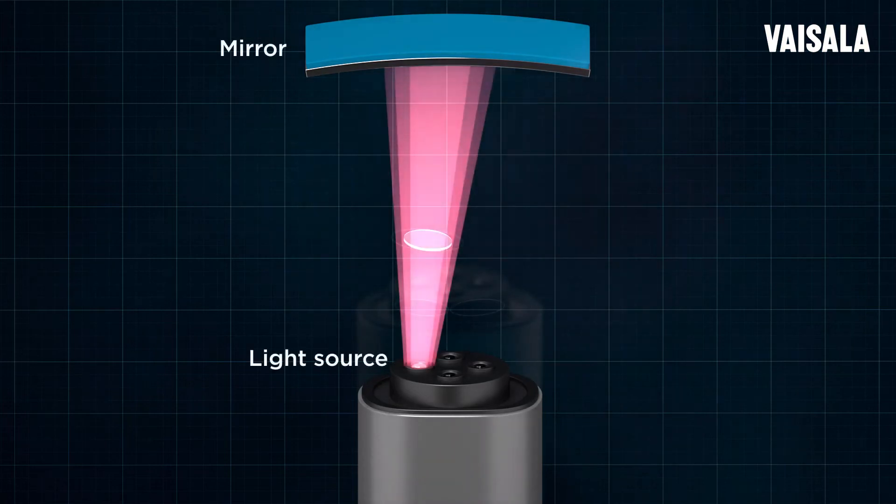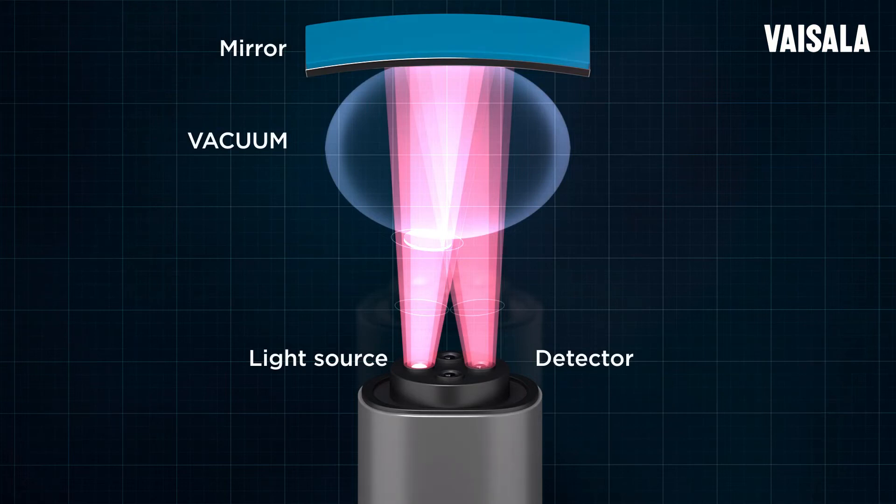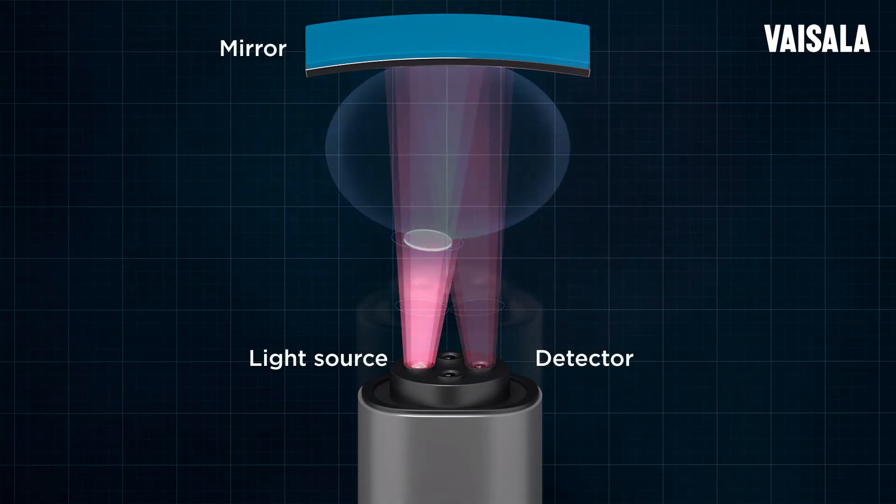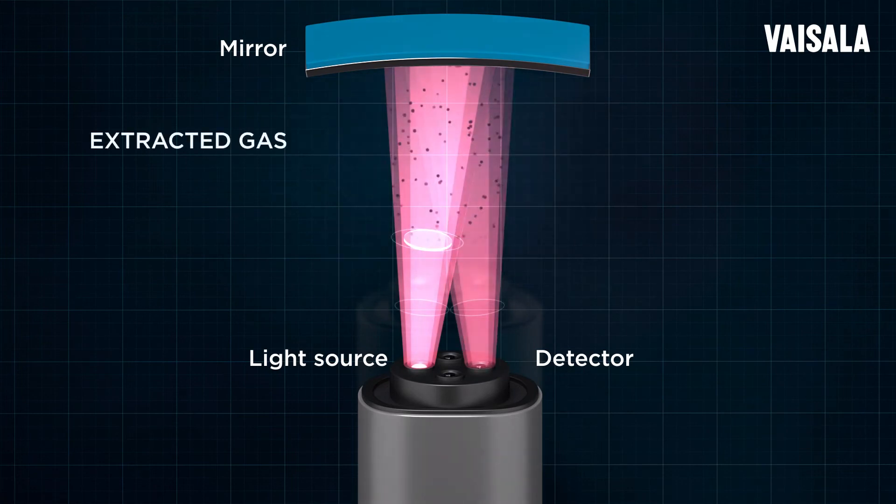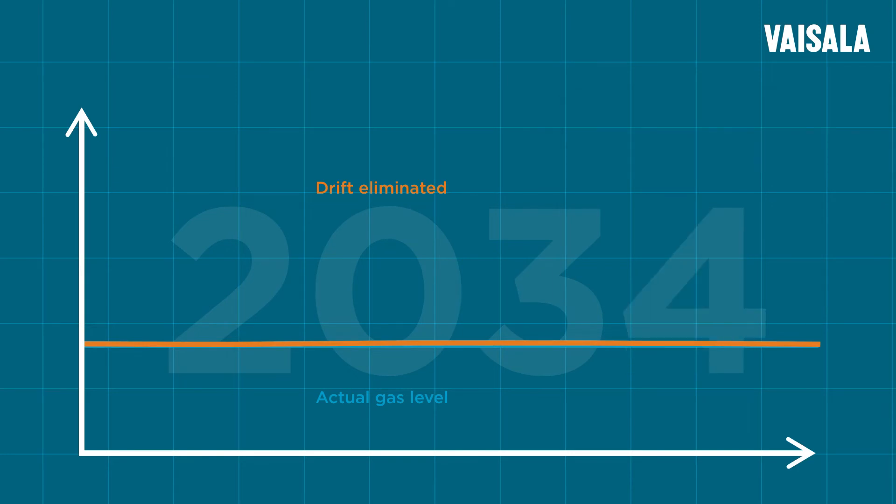On each measurement cycle, we measure twice: once without gas, which tells us the maximum amount of light from the IR transmitter, then with the gas. And because we know the maximum amount of light, we reliably measure the absorption of light in gas, completely eliminating drift and giving you reliable, accurate results.